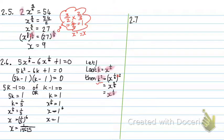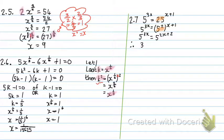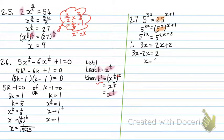Number 2.7: 5 to the power of 3X equals 25 to the power of X plus 1. First I get the prime factors of 25, which is 5 squared, to the power of X plus 1. I multiply in: it becomes 5 to the power of 2X plus 2. Now the bases are the same, so I use only the exponents: 3X equals 2X plus 2. Bringing 2X to the left: 3X minus 2X equals 2, so X equals 2.